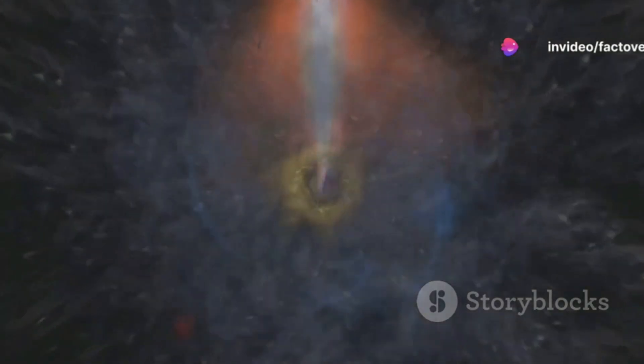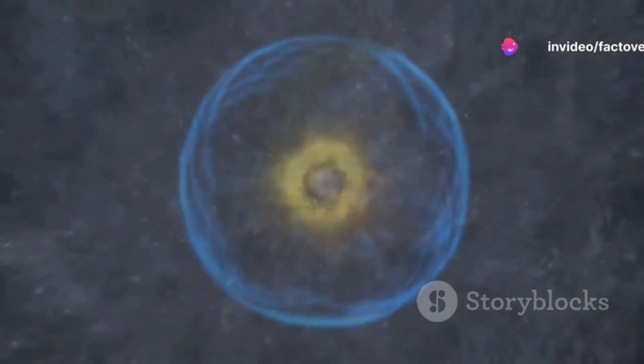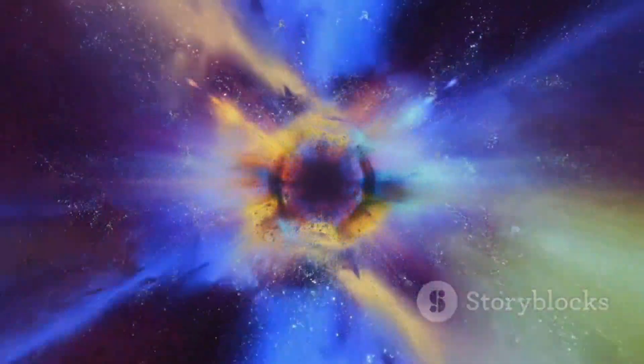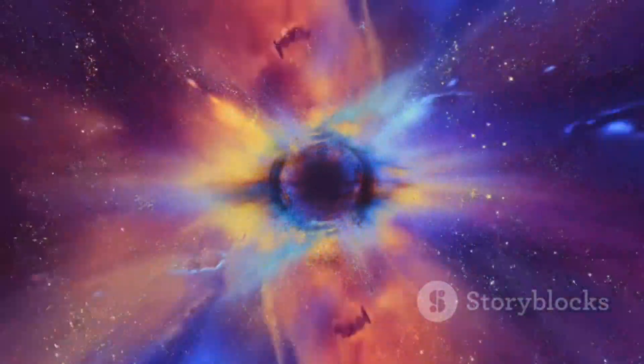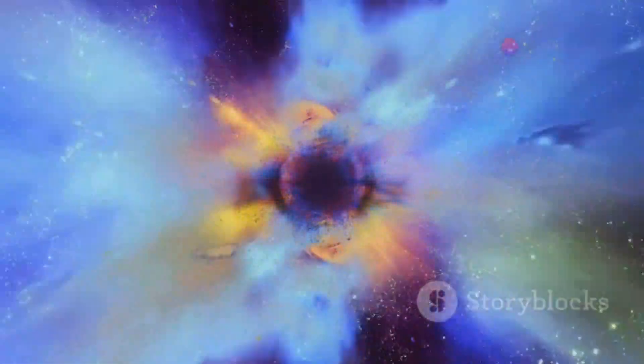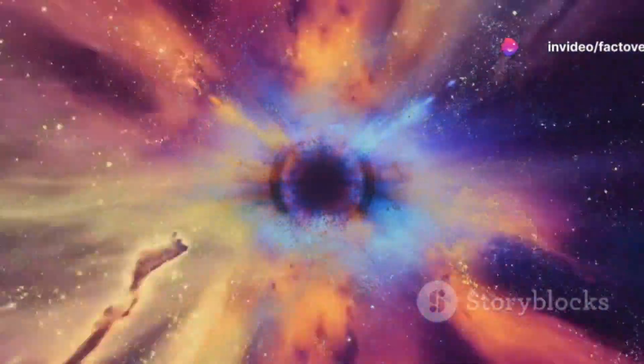The answer, as we later discovered, lay in the death throes of stars far more massive than our sun. These stars, at the end of their lives, collapse under their own gravity, triggering a supernova explosion and leaving behind a black hole or a rapidly spinning neutron star.